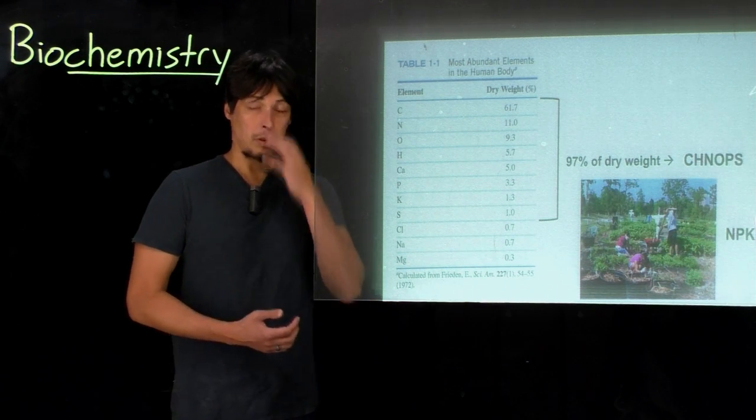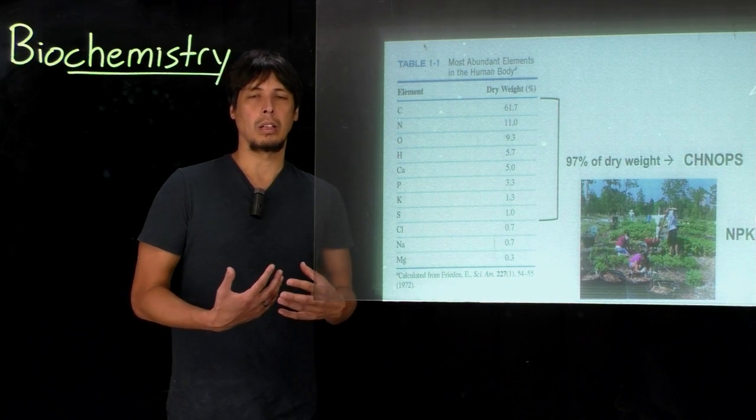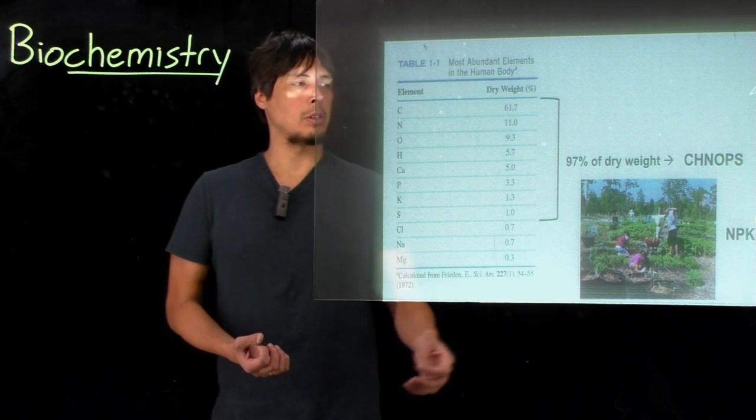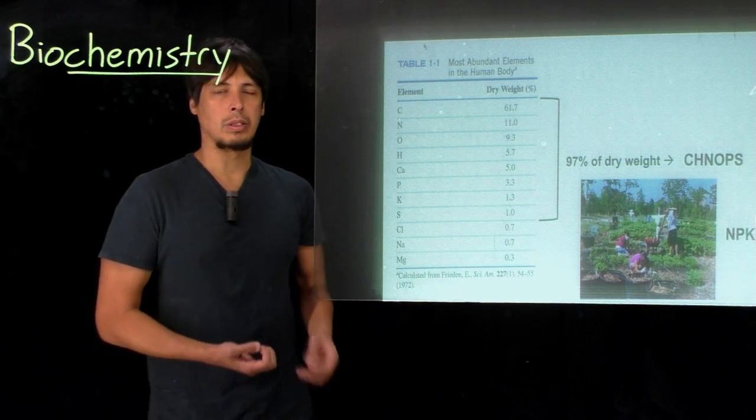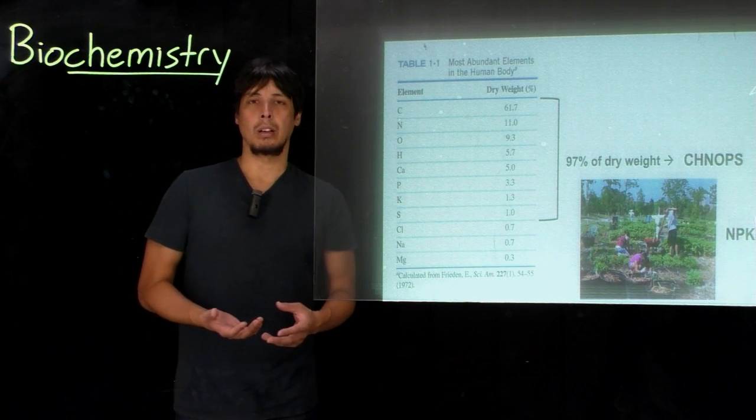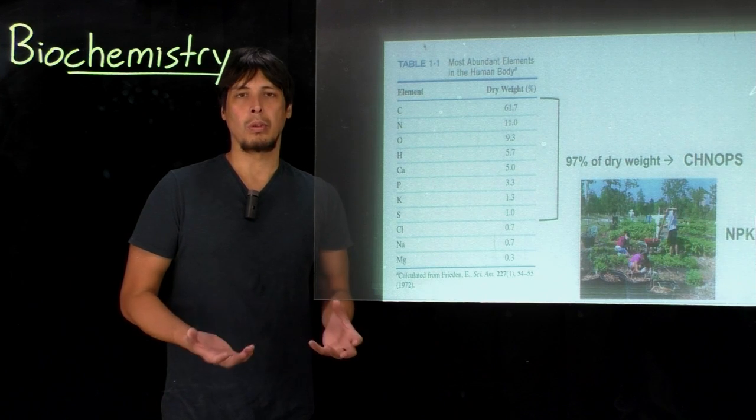Another place you may have heard of some of these very important elements is if you're into, for instance, gardening or cultivating vegetables or plants, where a common term seen is NPK, which is nitrogen, phosphorus, potassium. These elements were very early found critical for improving crop yields.